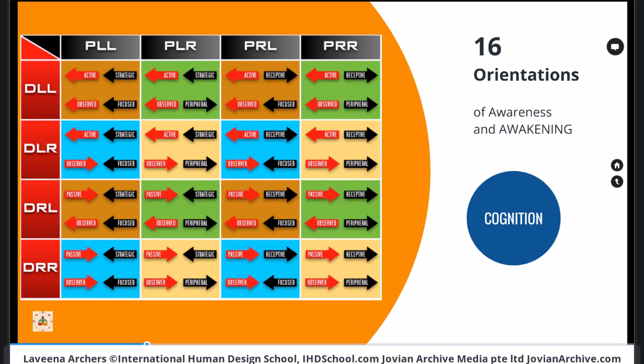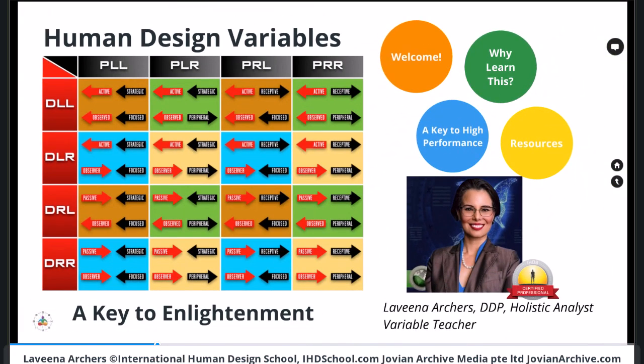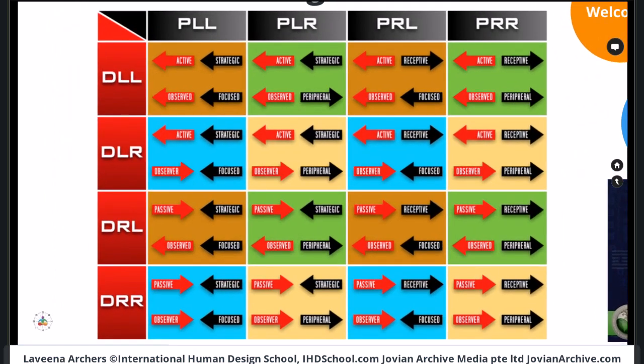Your brain-body systems between being active or passive are very, very different, and that's one of the things I'm going to help you discover today. There are 16 different orientations, so there are a lot of different ways to subdivide this variable grid. You could talk about binaries — left and right. There are four different arrows, each pointing left or right, which leads to these 16 different possible combinations.